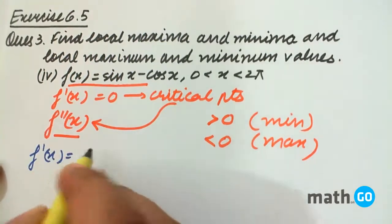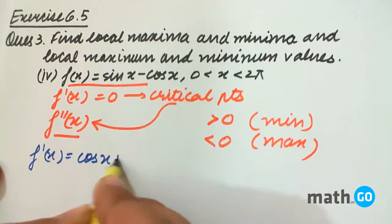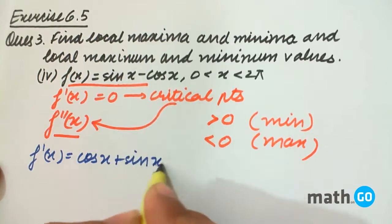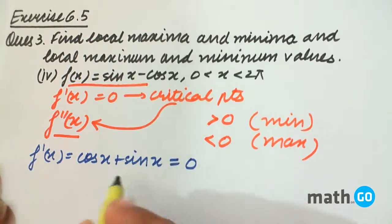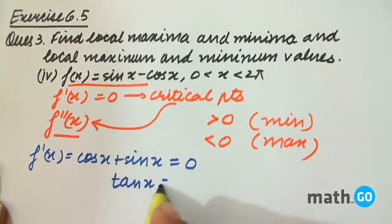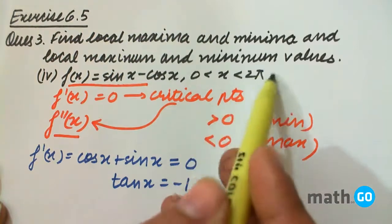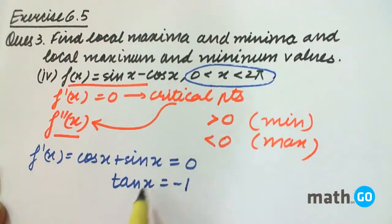Therefore, first of all, finding f'(x), that is equal to cos(x) plus sin(x). Now keeping it equal to zero, we get tan(x) equals to minus one. Then the values of x between zero to 2π for which this is satisfied is x equals to 3π/4 and 7π/4.